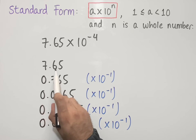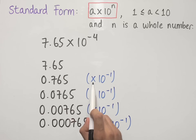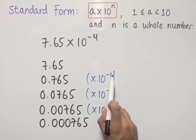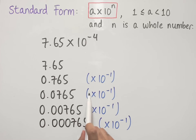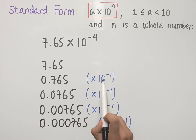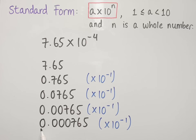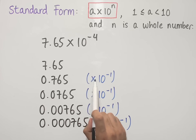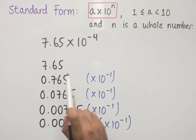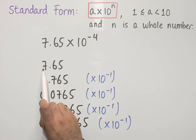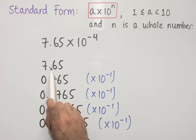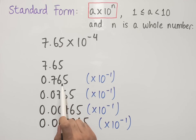So dividing 7.65 by 10 — or in other words multiplying by 10 to the power of minus 1 — gives us 0.765. If we multiply by 10 to the power of minus 1 again we get 0.0765. If we do this four times we end up with 0.000765. Notice how multiplying by 10 to the power of negative 1 results in every digit moving one place value to the right — so the 7 units become 7 tenths, and the 6 tenths become 6 hundredths.